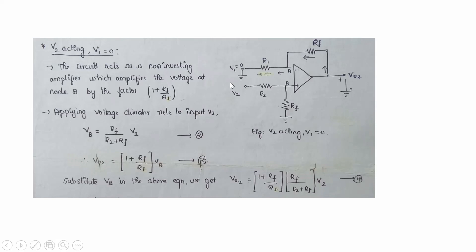Case 2: V2 is acting and V1 = 0. The circuit acts as a non-inverting amplifier. Two resistances R2 and Rf at the non-inverting terminal form a voltage divider, so the potential at node B is Vb = Rf / (R2 + Rf) × V2. The output for case 2 is Vo2 = (1 + Rf/R1) × Vb, giving Vo2 = (1 + Rf/R1) × (Rf / (R2 + Rf)) × V2.